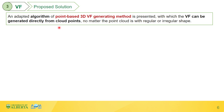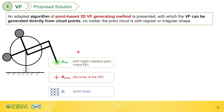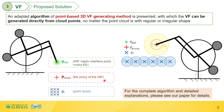Motivated by this challenge and inspired by Ryden's work, an adapted algorithm of point-based 3D VF generating method is presented in this study. With this method, the VF can be generated directly from point cloud data, regardless of whether the shape is regular or non-regular. The three key parameters are: P-HIP, where HIP is the haptic interface point equivalent to the robot end-effector; P-Proxy, which is the virtual avatar of the HIP point; and small P-i, which is a single point in the point cloud.